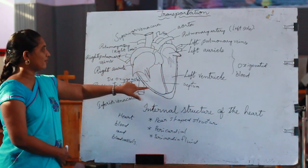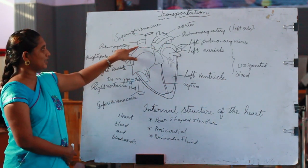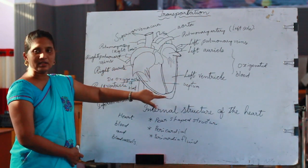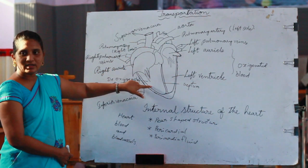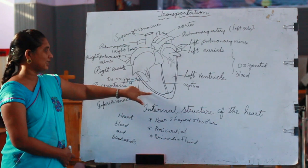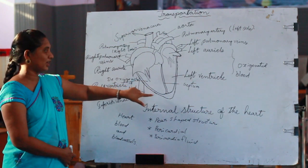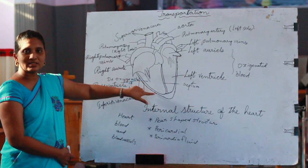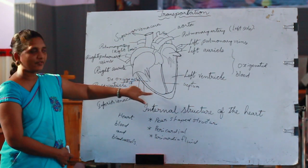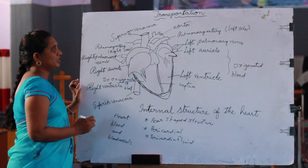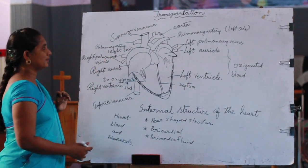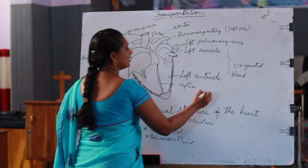The muscle walls of the heart consist of coronary vessels. Coronary vessels are spread throughout the muscle walls of the heart.